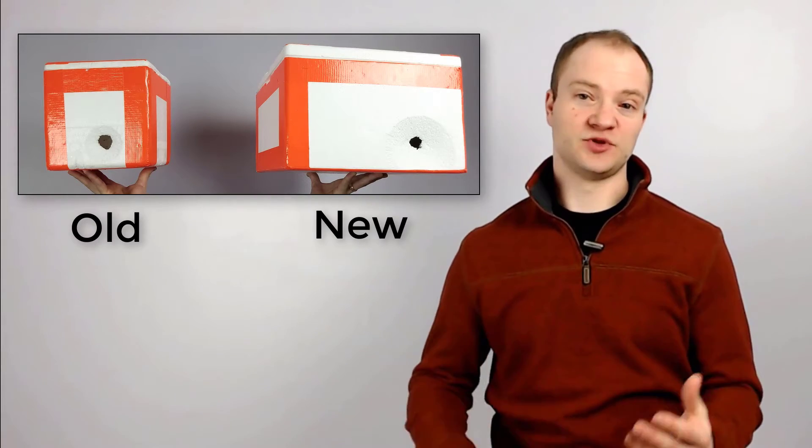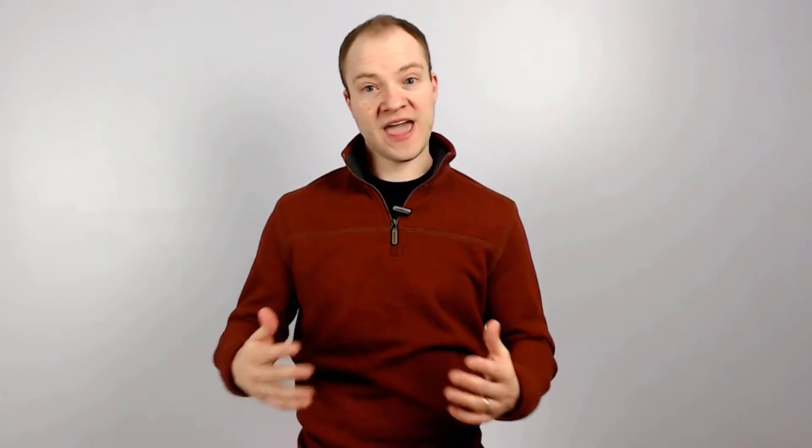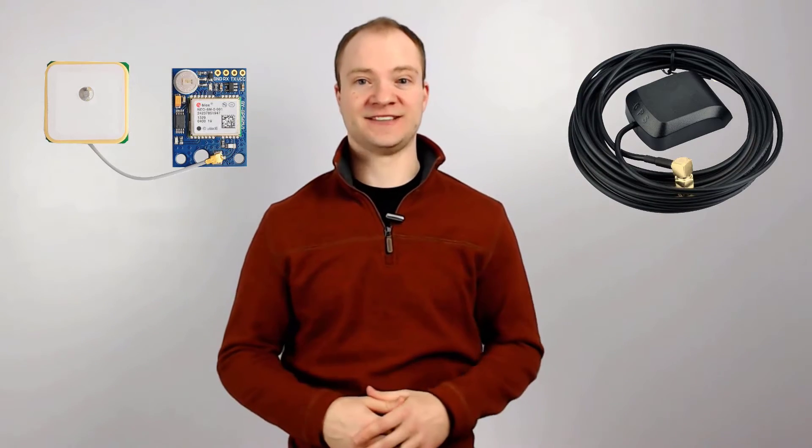In addition to this, we're also using a larger payload box to create some more space between the camera and the tracking system. And we've also switched from a passive GPS antenna to an active GPS antenna. This active GPS antenna contains a filter and an amplifier to weed out interference on the GPS signals.